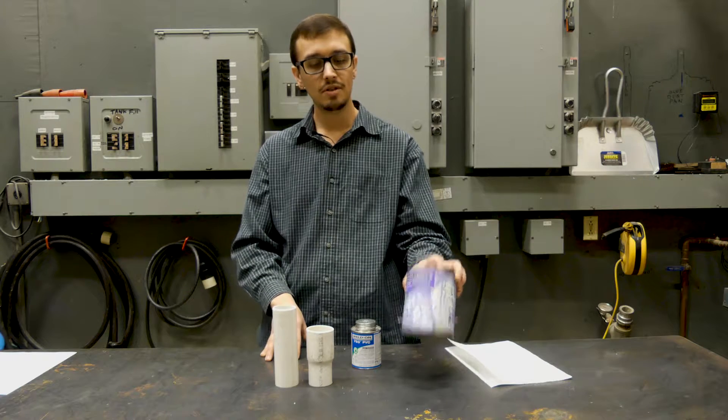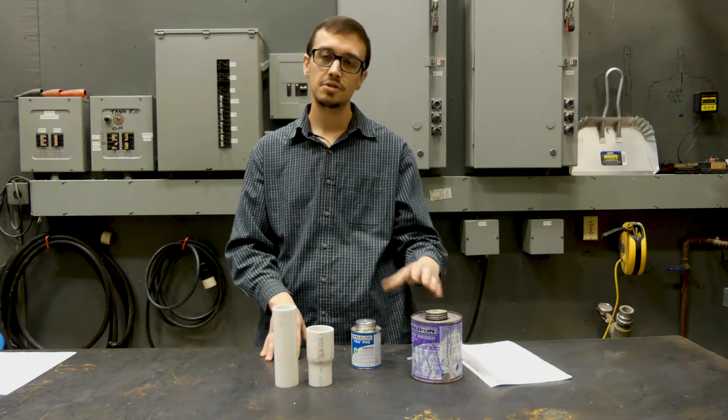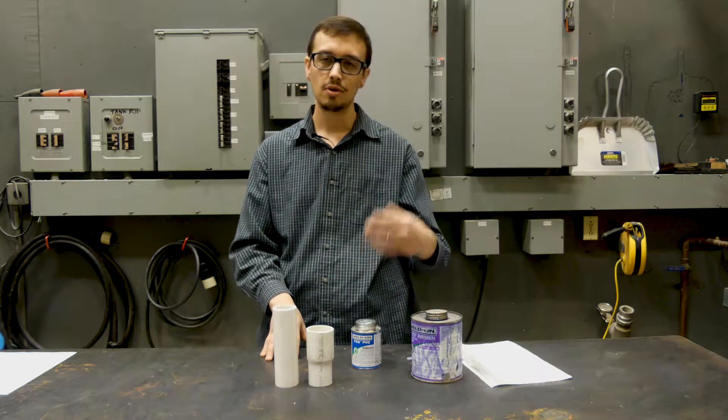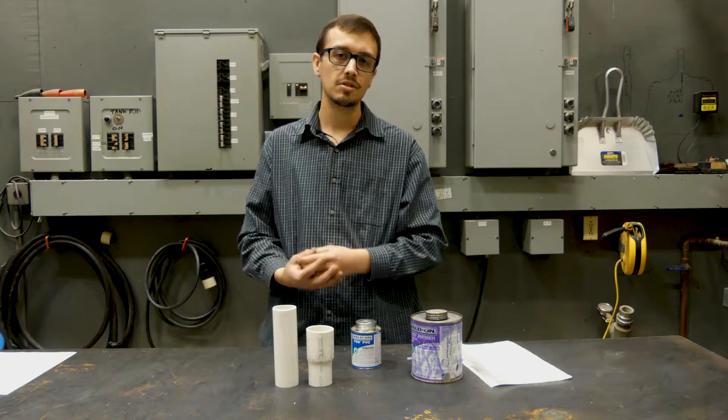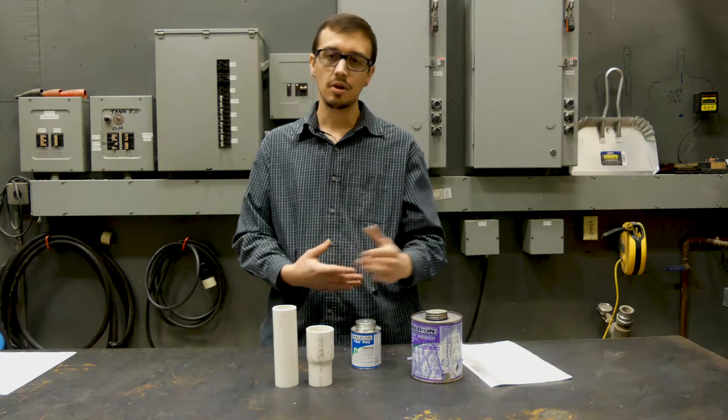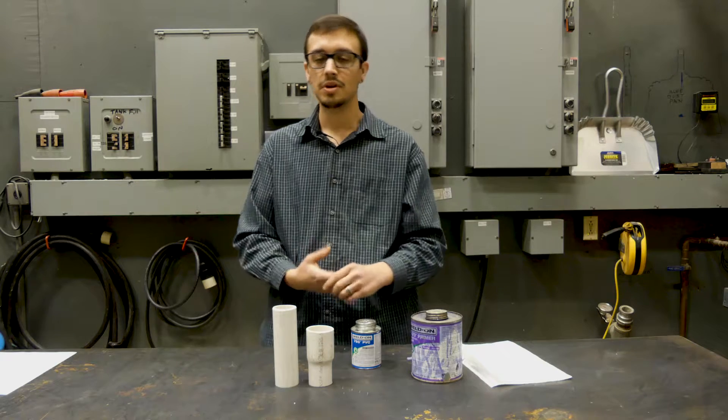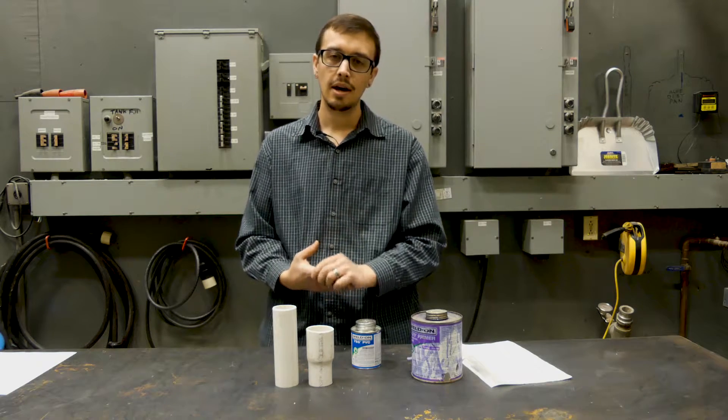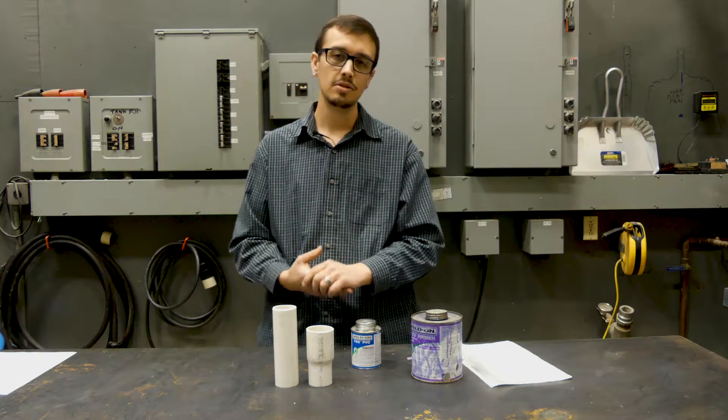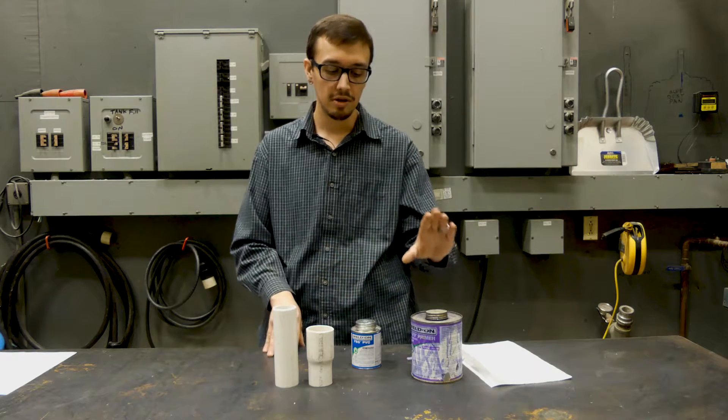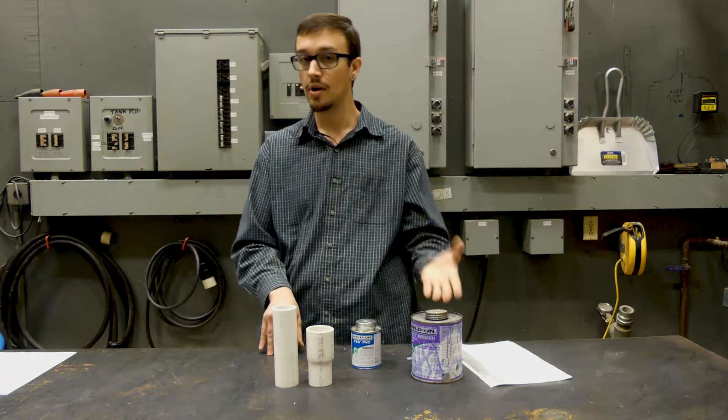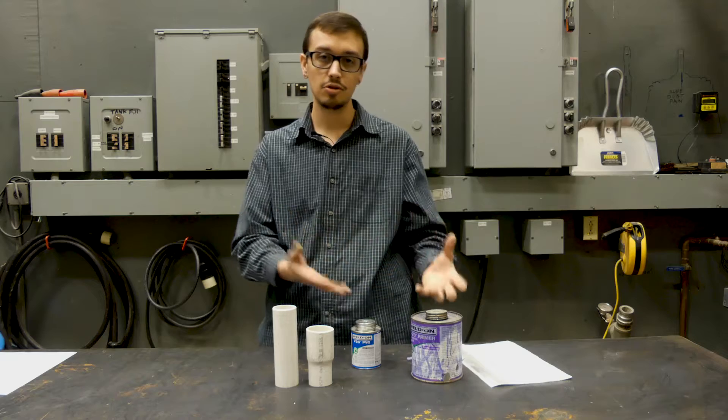So we have the purple PVC primer. This is industry standard in most applications. For a lot of our internal assemblies here at RC Wurst, we use the clear primer for a cleaner look, but when you're out in the field or doing work inside of a home or commercial business, a lot of times the plumbing code is going to require a purple primer. So we're going to use that today because it's easier to visually see.